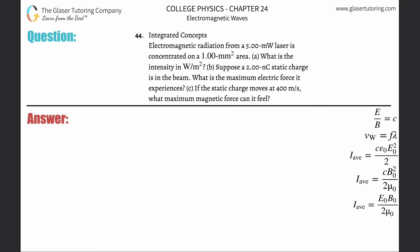Number 44, Integrated Concepts. Electromagnetic radiation from a 5-milliwatt laser is concentrated on a 1-millimeter square area. Letter A, what is the intensity in watts per meter squared?